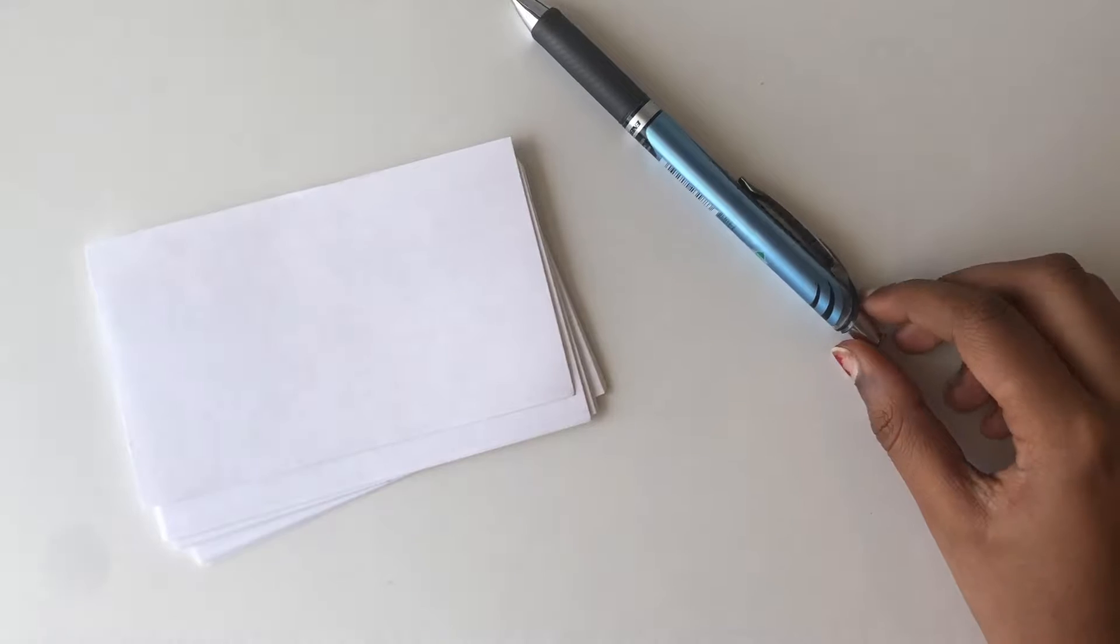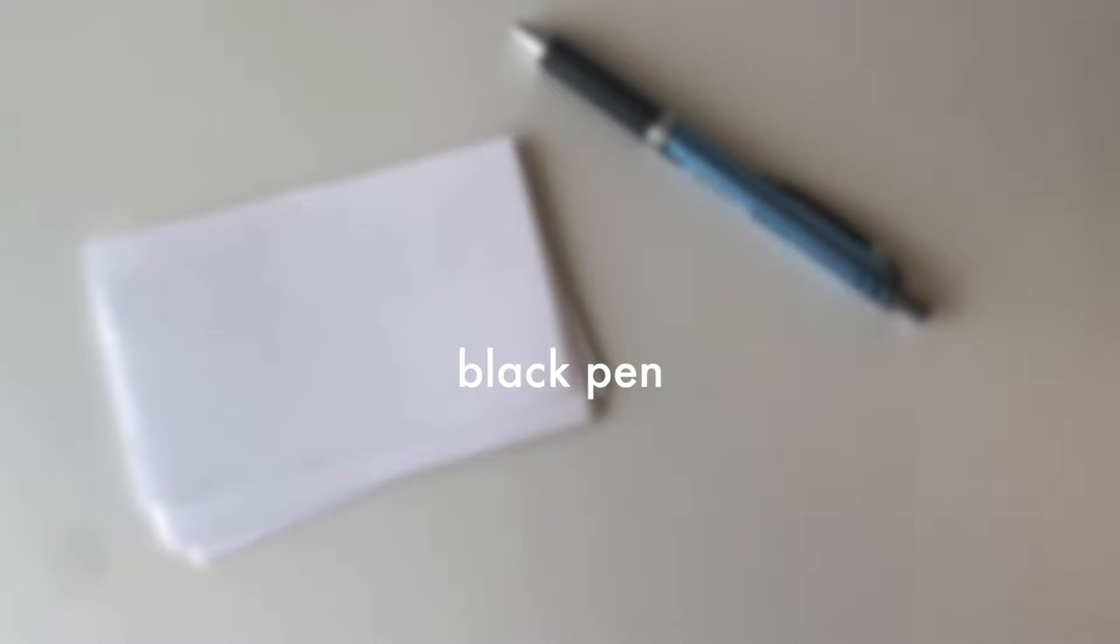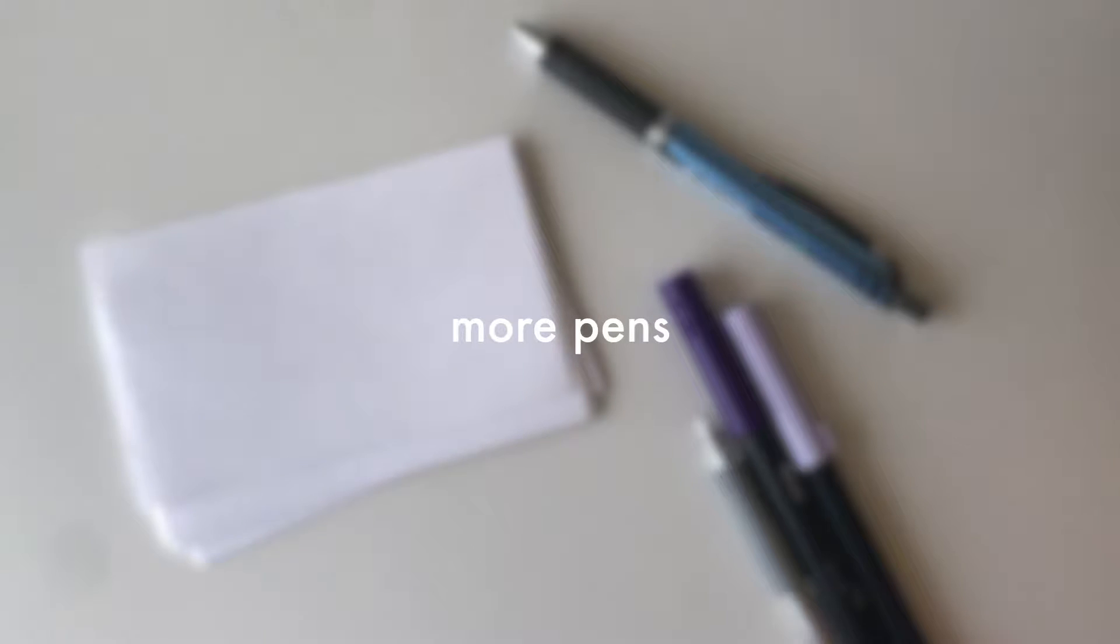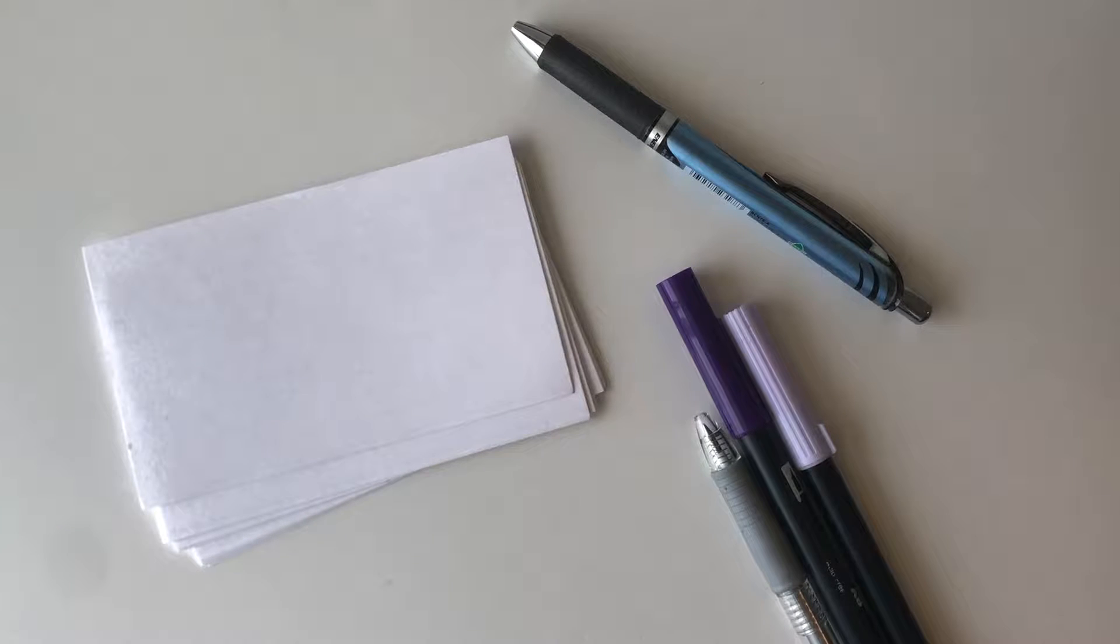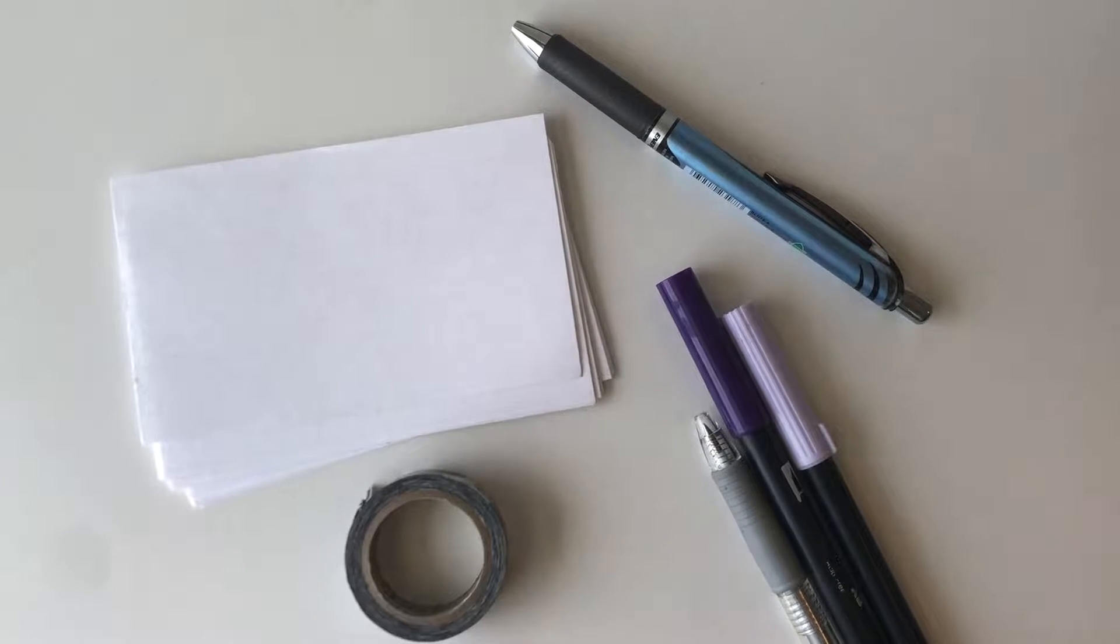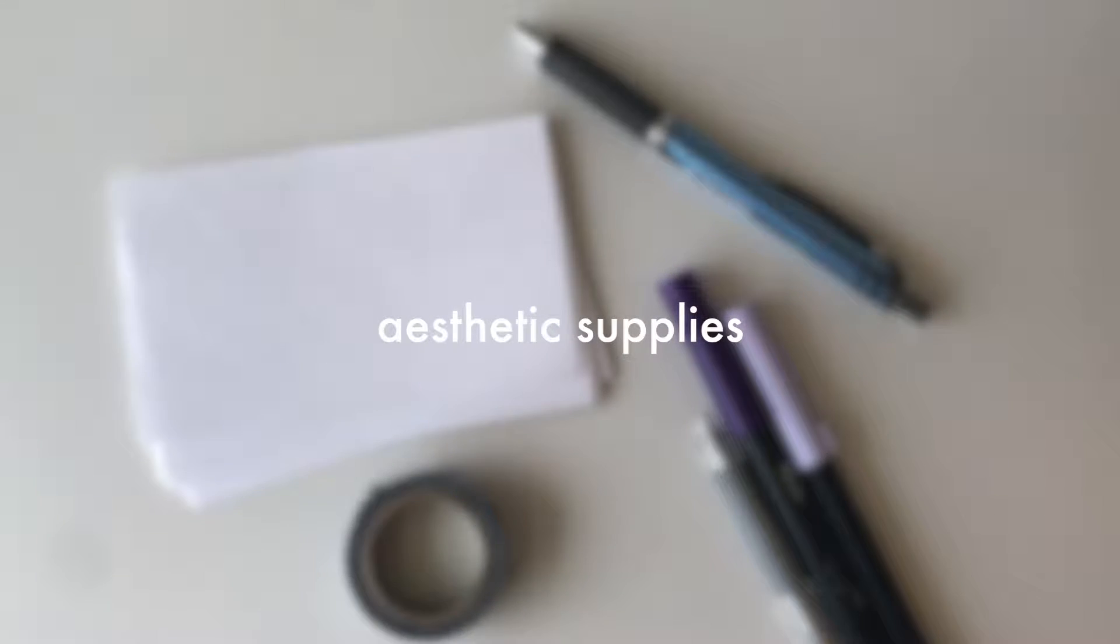The materials I'm going to be using throughout this video are flash cards—I'm using the standard 5x3 ones—and you're also going to want a black pen to write down all your information. You'll also want more pens to really spice up your flash cards, and finally you'll want some aesthetic supplies. I'm using washi tape because it's very inexpensive.